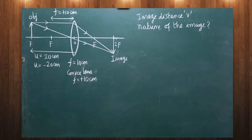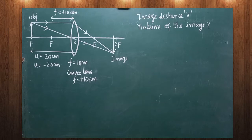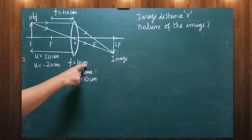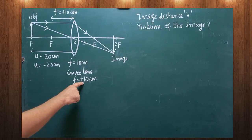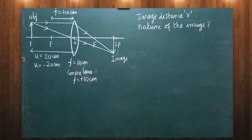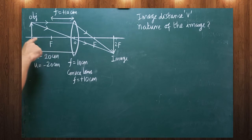We are going to solve problem number 1 given on page number 30 in the optics chapter, that is the first problem in subdivision 8. A convex lens is given whose focal length is 10 centimeters. The focal length of a convex lens must be taken as positive, therefore it is written as plus 10 centimeters.